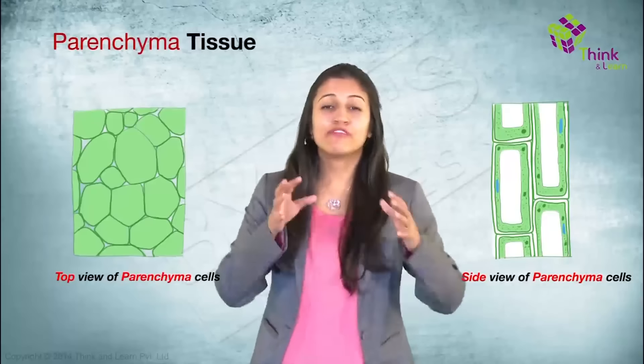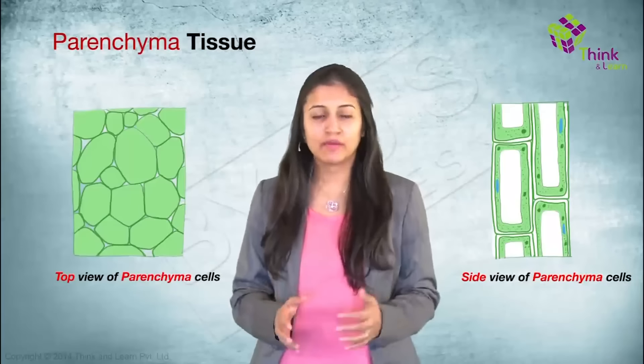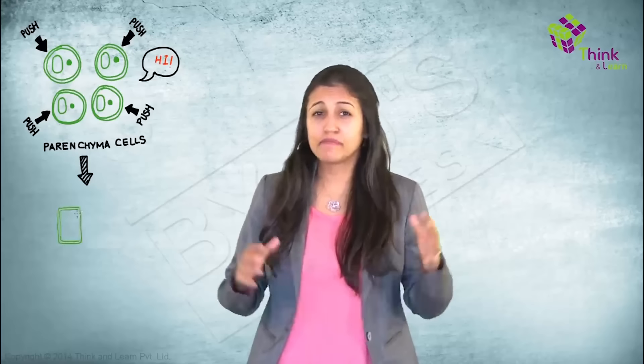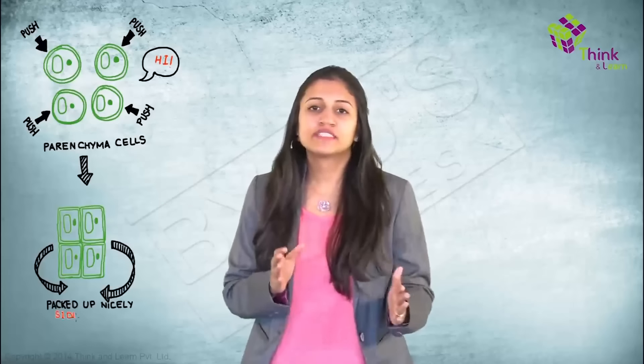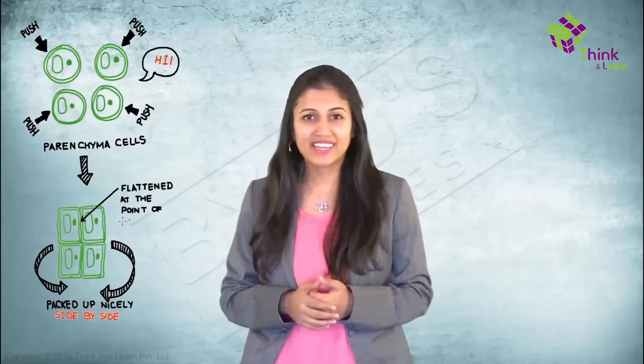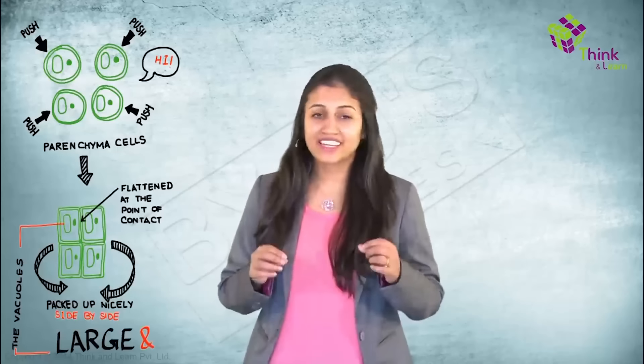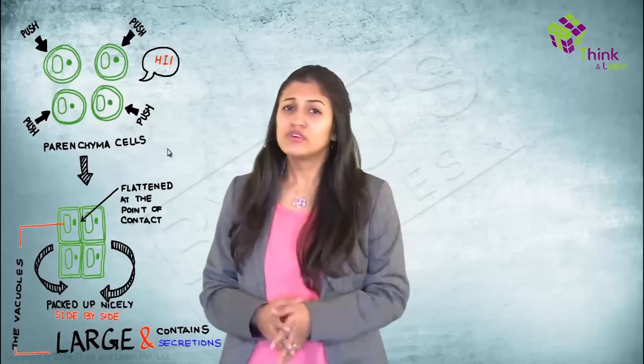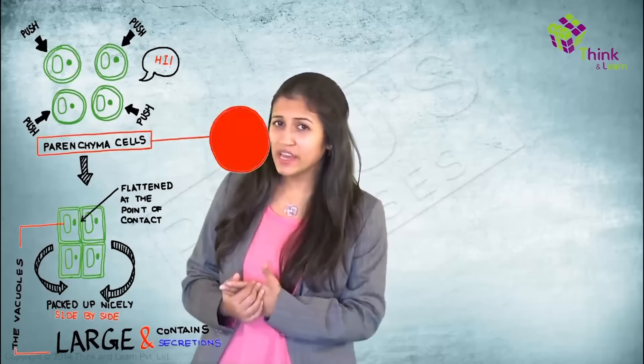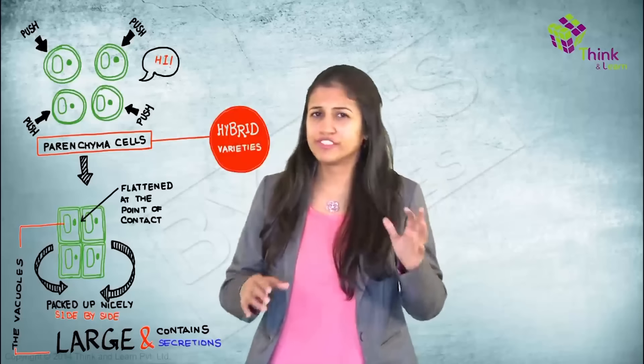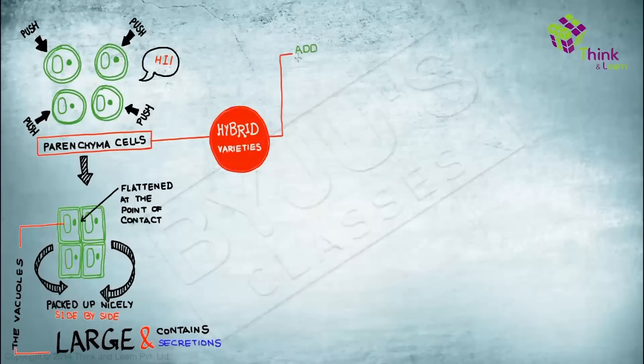Parenchyma, made up of parenchyma cells, the most abundant cell type found in all major parts in higher plants. When they are first made, they are spherical in shape and then they get packed up nicely, side by side. And because of their thin walls, they go on and get flattened at the points of contact. The vacuoles are large and can contain some secretions like starch, oils and some crystals. Now, there are some hybrid varieties of parenchyma cells depending on where they are found and they have some obvious names too.